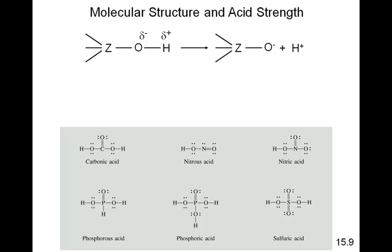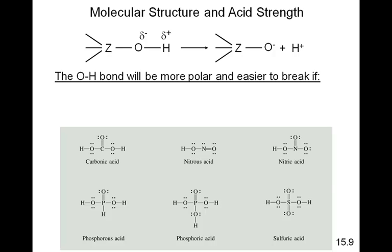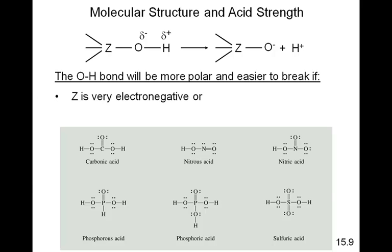So how does structure determine acid strength? The O-to-H bond will be more polar and it will be easier to remove that proton if Z is very electronegative, or Z has a high oxidation state. The more polar that this bond is, the stronger that acid is going to be. We're going to look at these two factors in two separate situations: situation one will be electronegativity, and situation two will be oxidation state.